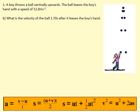Okay, this is part B of the same question. What is the velocity of the ball 1.7 seconds after it leaves the hand? So we need to set up a different set of suvats for this.